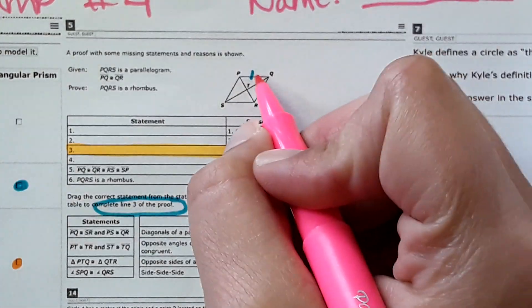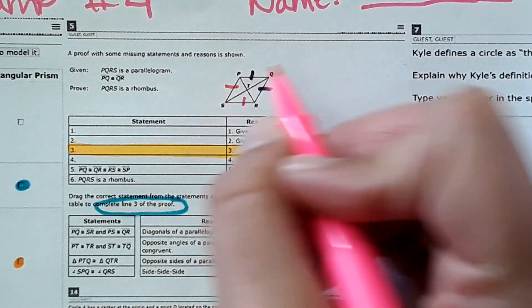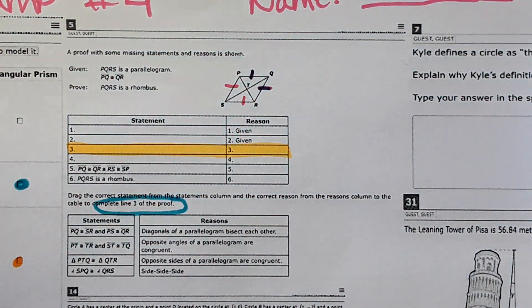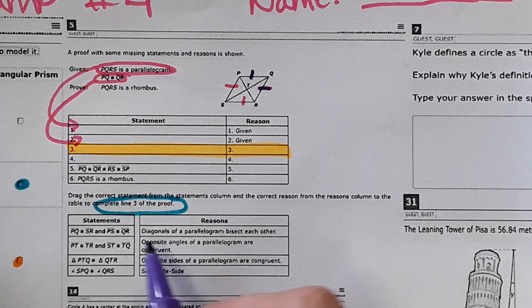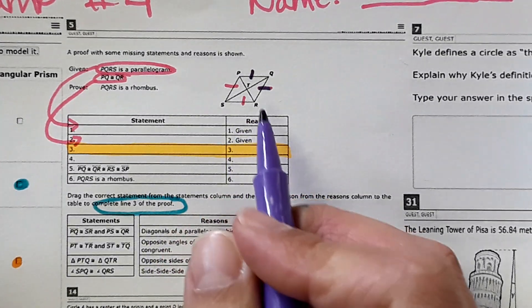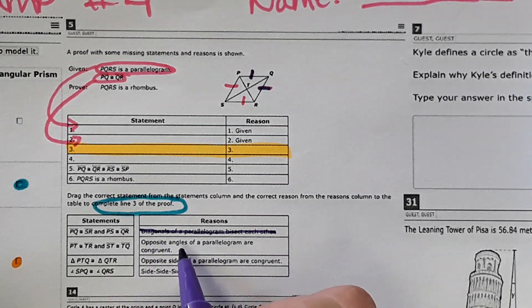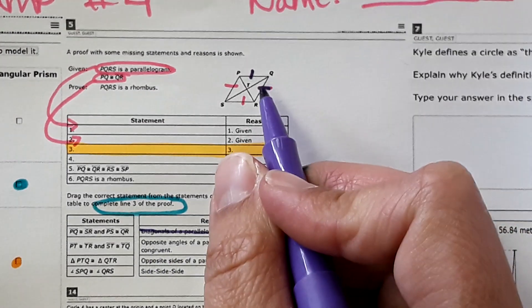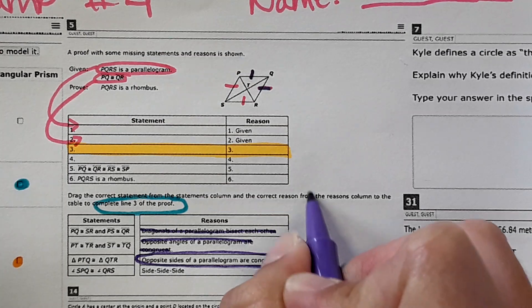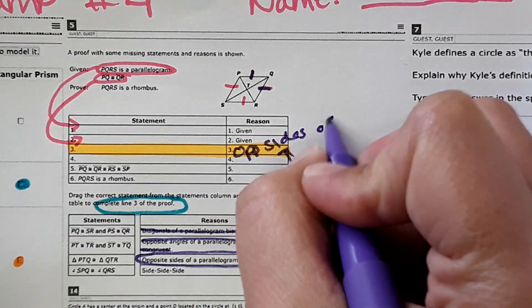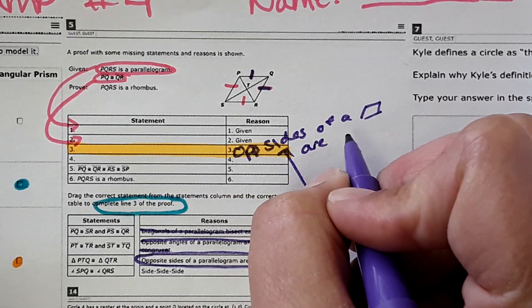We're trying to prove it's a rhombus, and a rhombus has all sides equal. Since PQ equals QR, and on a parallelogram opposite sides are equal, if we prove opposite sides are equal we can prove all sides are the same. The reason we're looking for is: opposite sides of a parallelogram are congruent.